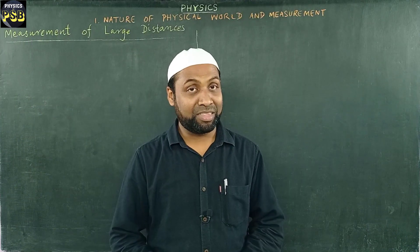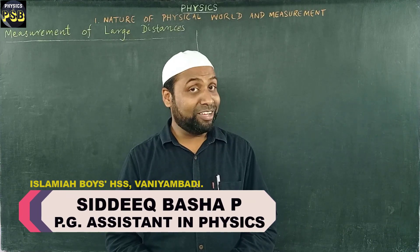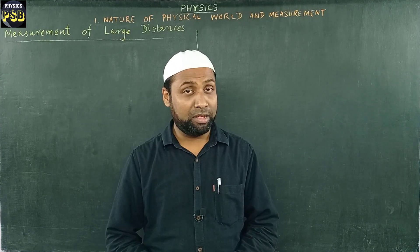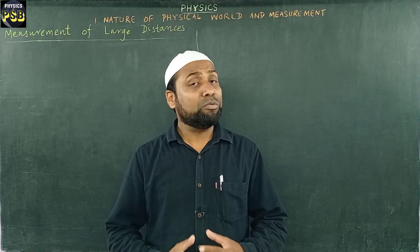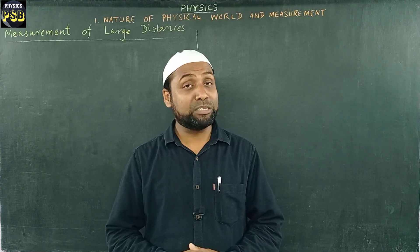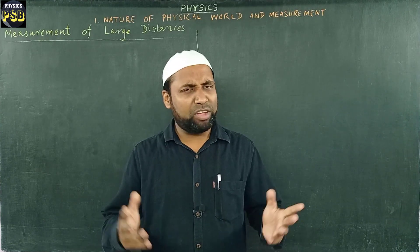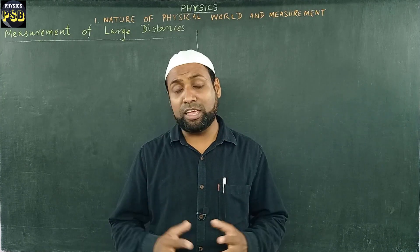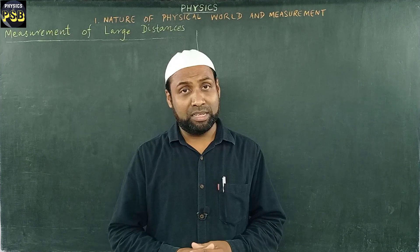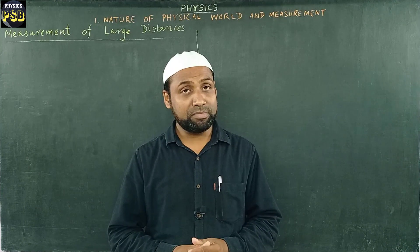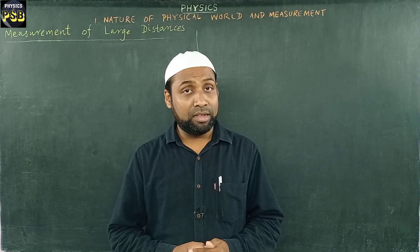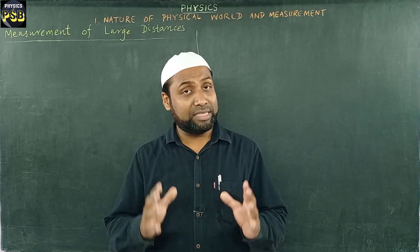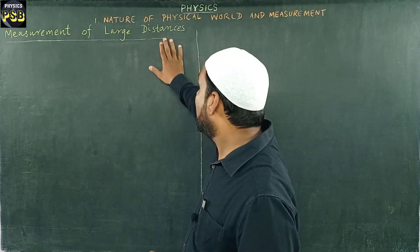Assalamu alaikum, hope you are doing fine. To measure the distance between two points we use the meter scale. If the distance is a little large, then we use the measuring tape. If you want to measure the distance between Earth and Moon, or the distance between Earth and some planet, we cannot use meter scale or measuring tape. In such cases we use indirect methods such as the triangulation method, parallax method, radar method, and even laser pulse method. In this video we are going to discuss about these indirect methods used for the measurement of large distances.